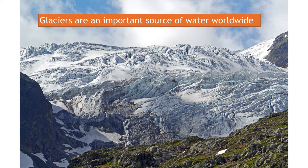Glaciers and snow fields provide much of the water on which billions of people rely. This figure shows the snowpack in the western Rocky Mountains, which provides 75% of the annual flow of the Colorado River.